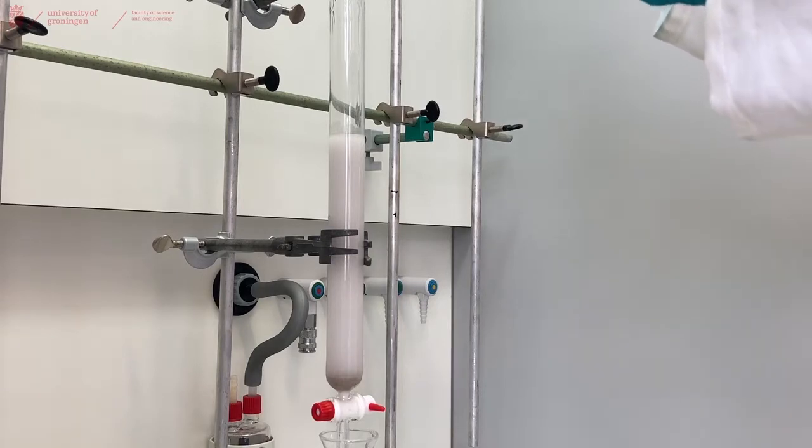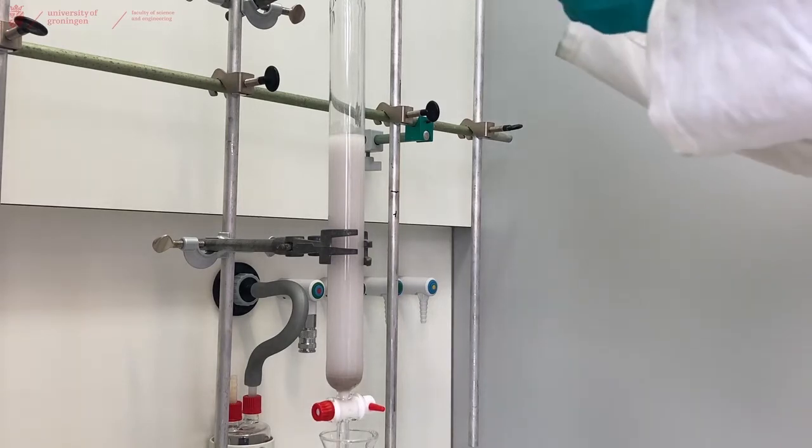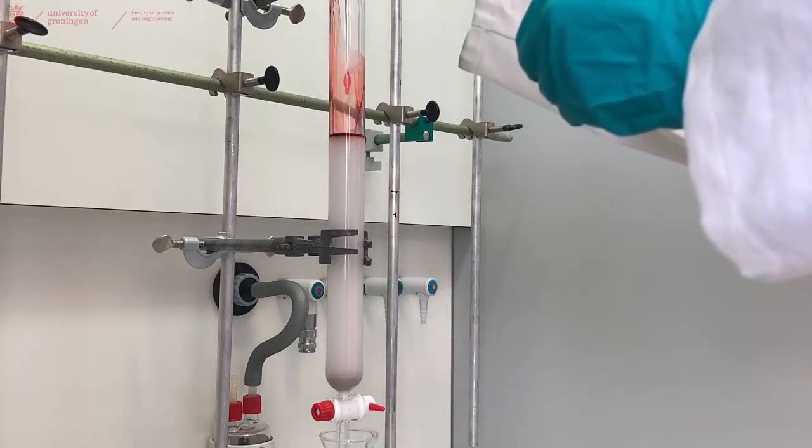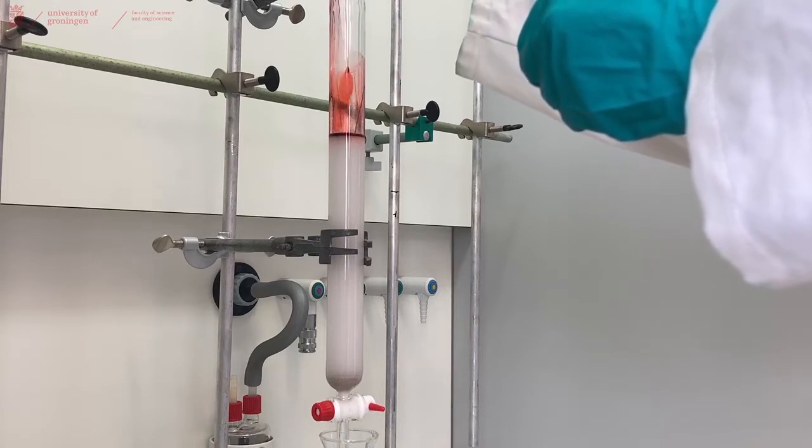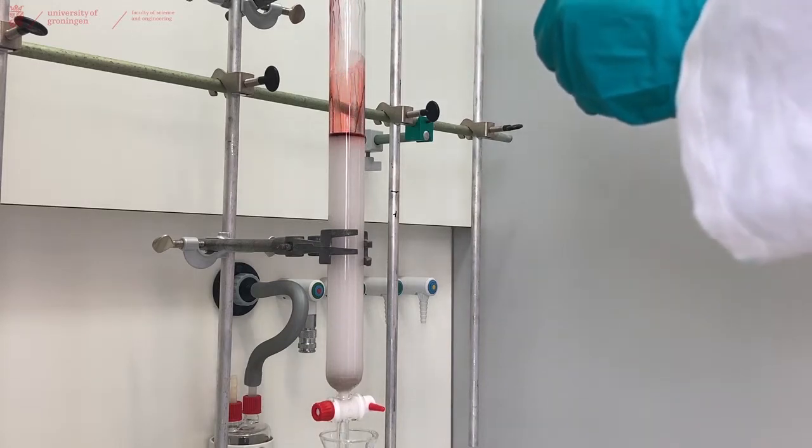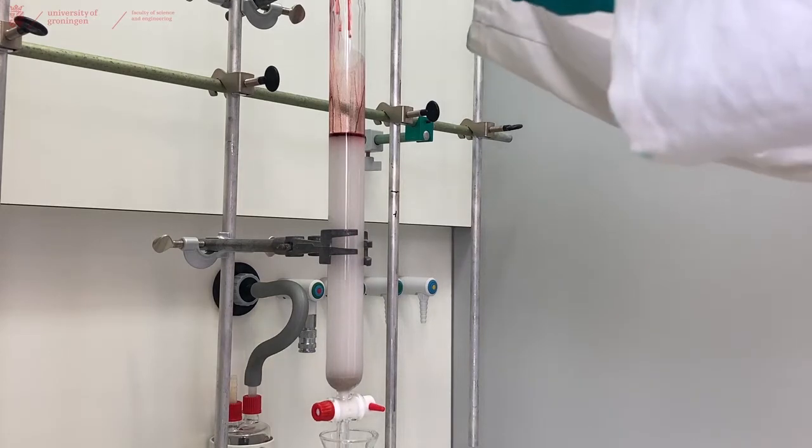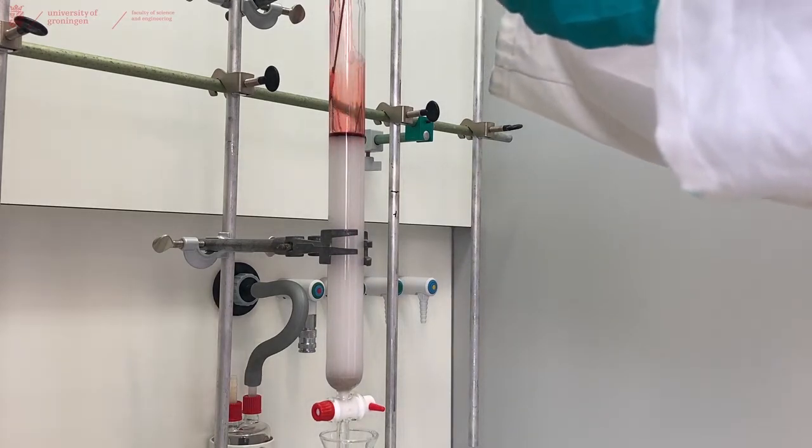And now we will place our compound on top of the column. We dissolved our crude mixture in a minimum amount of our eluent, and we will place a thin layer, depending on how much you have of course, on top of the column. Try to not disturb the top of your silica layer while doing this.